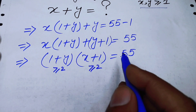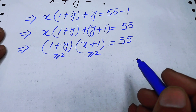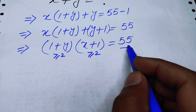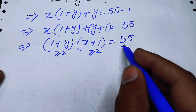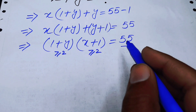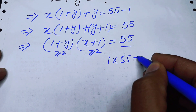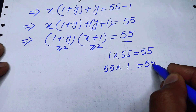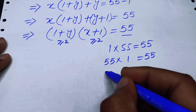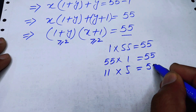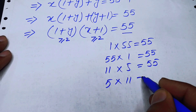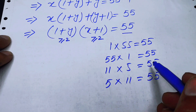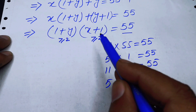This gives rise to four cases. We find the factor pairs of 55: 1 × 55 = 55, 55 × 1 = 55, 11 × 5 = 55, and 5 × 11 = 55. We now check which of these four cases satisfy the constraints of our equation.